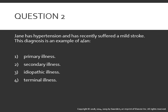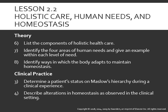Question two: Jane has hypertension and has recently suffered a mild stroke. This diagnosis is an example of: one, primary illness; two, secondary illness; three, idiopathic illness; or four, terminal illness. The answer is number two — a secondary illness. A stroke results from or is caused by the primary illness, which is hypertension. An idiopathic illness is one with no known cause. A terminal illness is incurable and ultimately results in death.